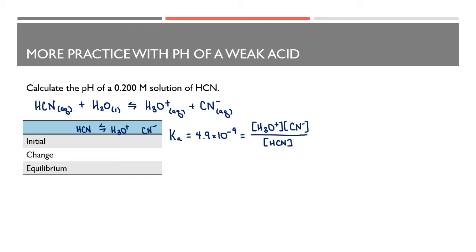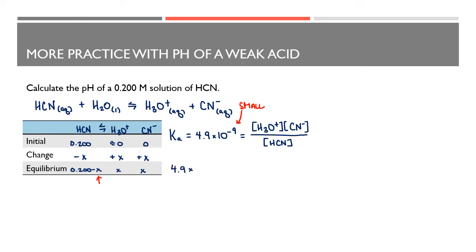I'll write the ICE table. The initial concentration of HCN is 0.2, the initial concentration of hydronium is about 0 — in pure water it's 1.0 × 10⁻⁷ — and CN⁻ is initially 0. I'll use the coefficients to put in the x values and find equilibrium concentrations. This Ka is very, very small, which means x is very small, so we can eliminate x from the denominator and just use 0.2 as the equilibrium concentration for HCN.